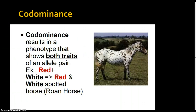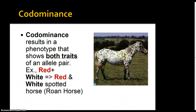The next one is called codominance. In codominance, rather than getting a blend, we get the presence of both traits — both alleles are expressed. A good example is a red and a white horse producing a roan horse, which is red and white spotted. In this horse, we have both red and white spots. Cows can also be roan. In codominance, we get both traits present — we don't get a mix, but they're both expressed.